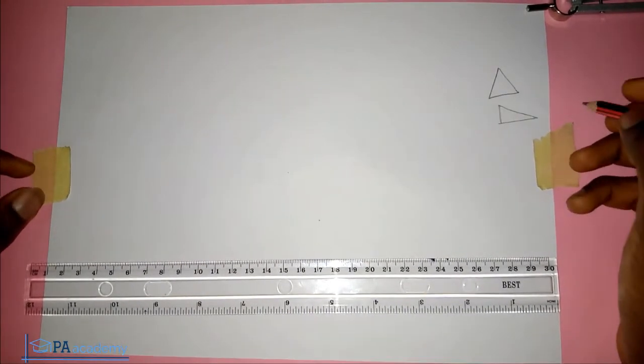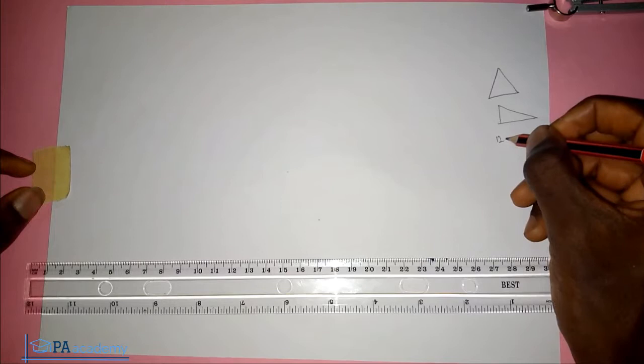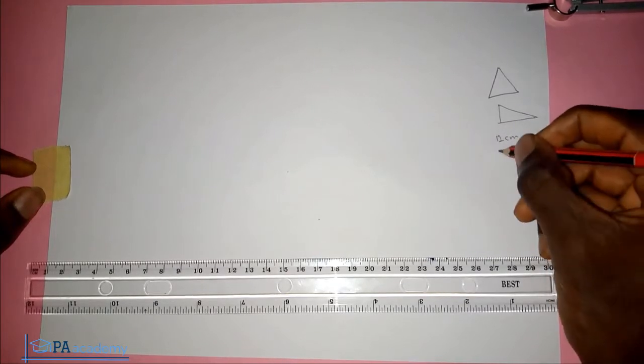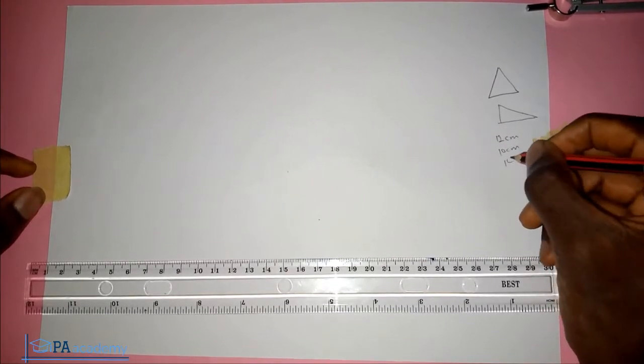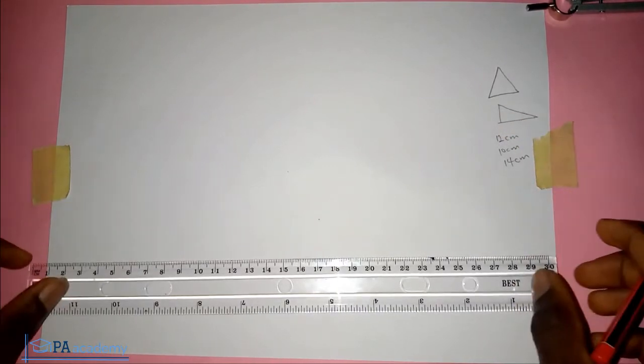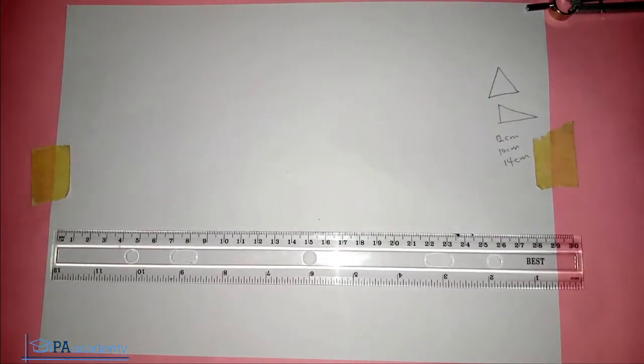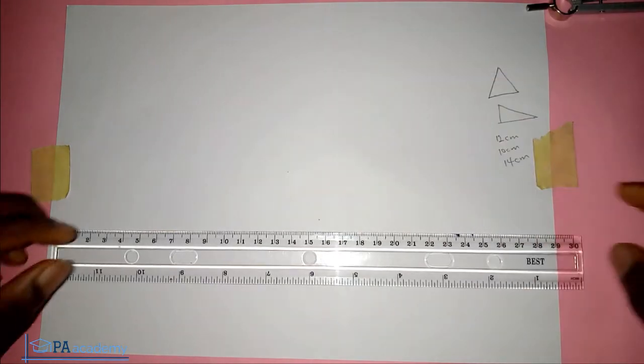In this video we are going to be looking at a triangle with sides of 12 cm, 10 cm and 14 cm. So if you are given these lengths and you are asked to construct a triangle of that length, how do you go about it?